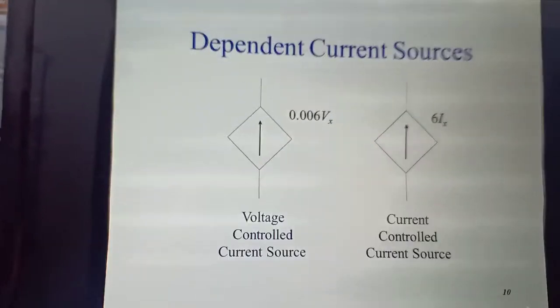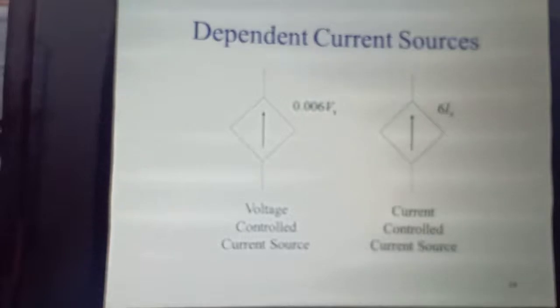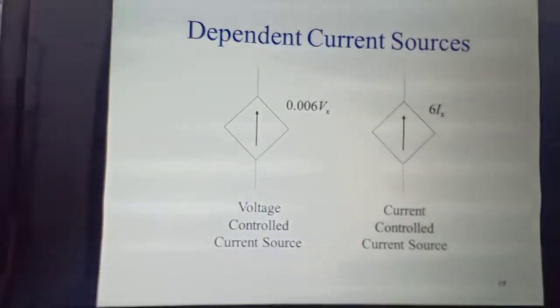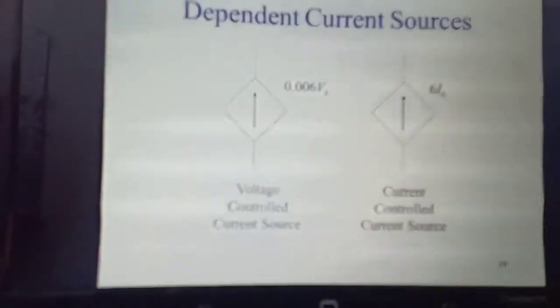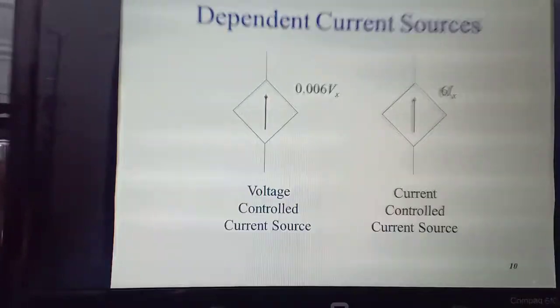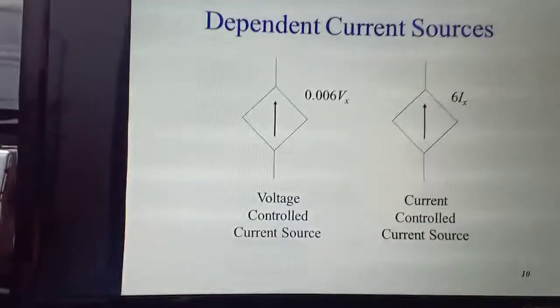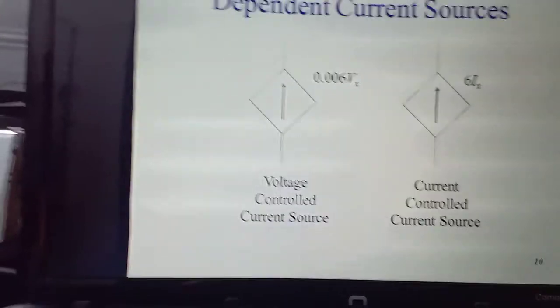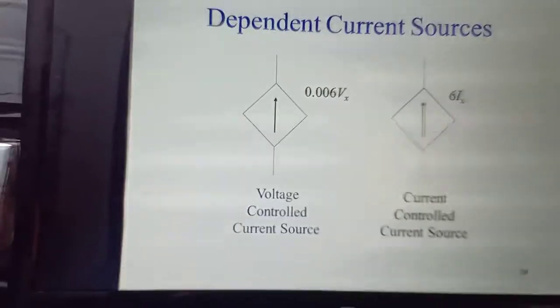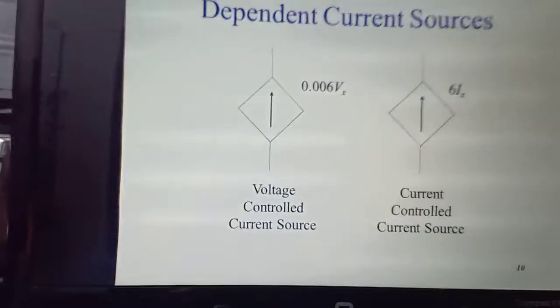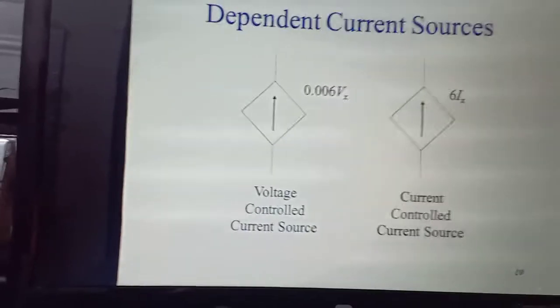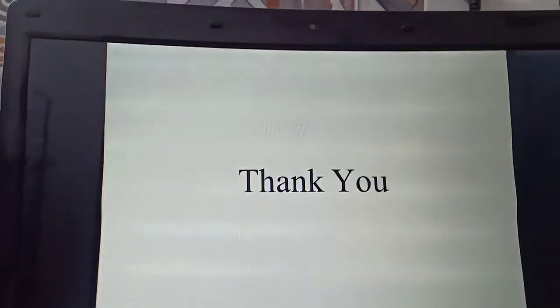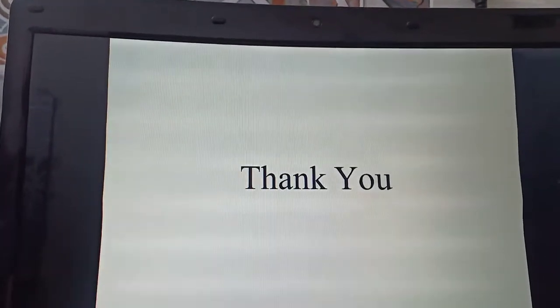Dependent current sources depend on current source: voltage controlled current source and current controlled current source. In the first one, it is voltage controlled current source. And current controlled current source. Thank you. These were the circuit elements and dependent and independent sources and basic electrical quantities we have studied.